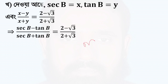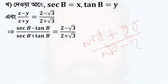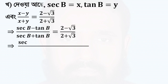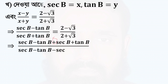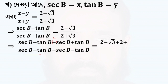Tan theta is equal to 1 by root 3. Sec b minus tan b plus sec b minus tan b. If we see sec b plus tan b, we can see a minus. A plus is a minus, sec b minus tan b.